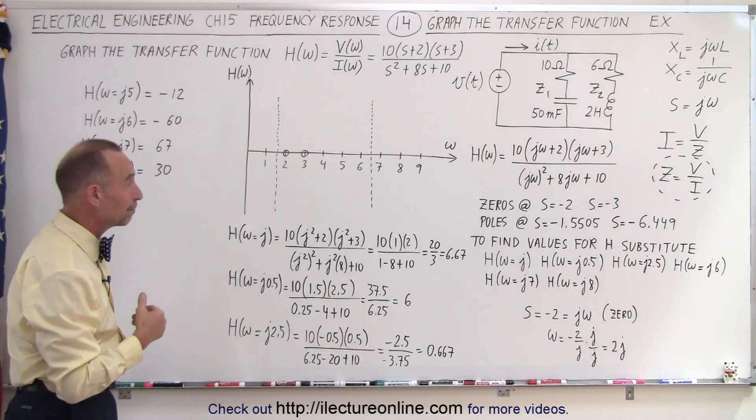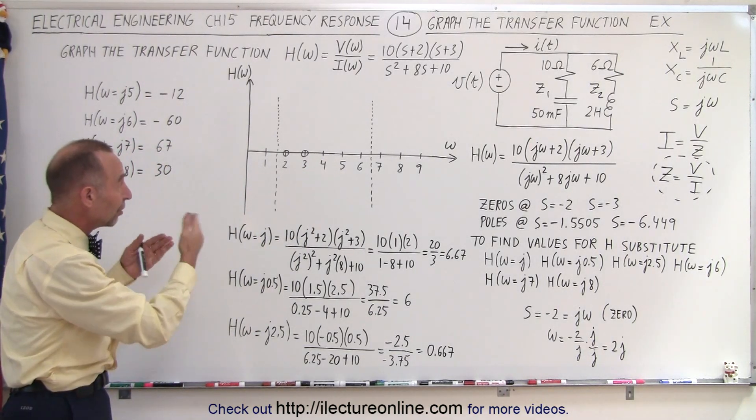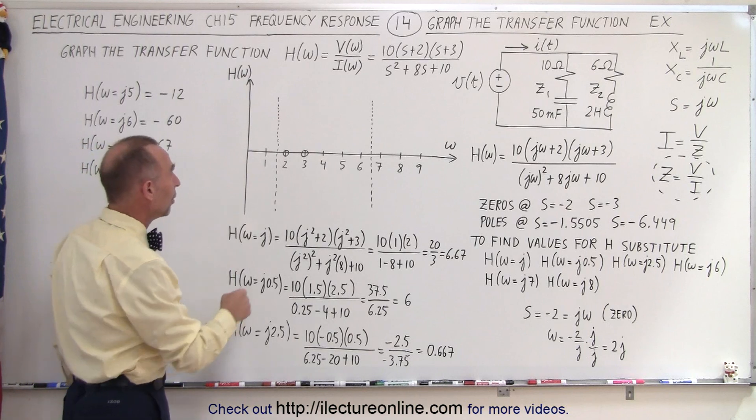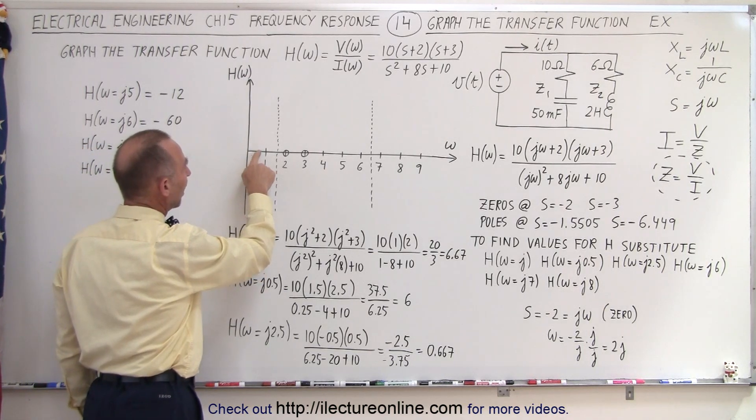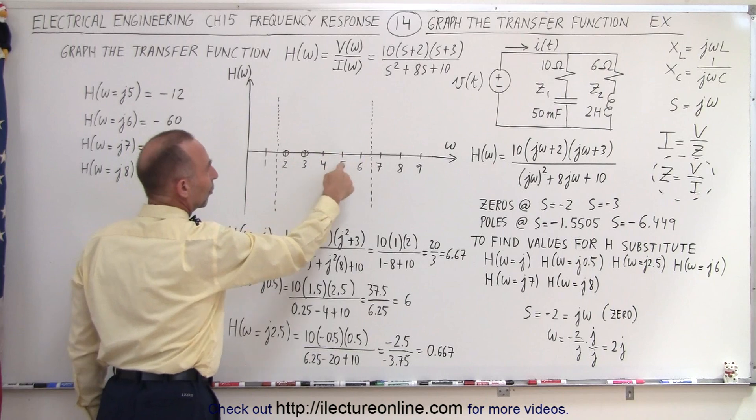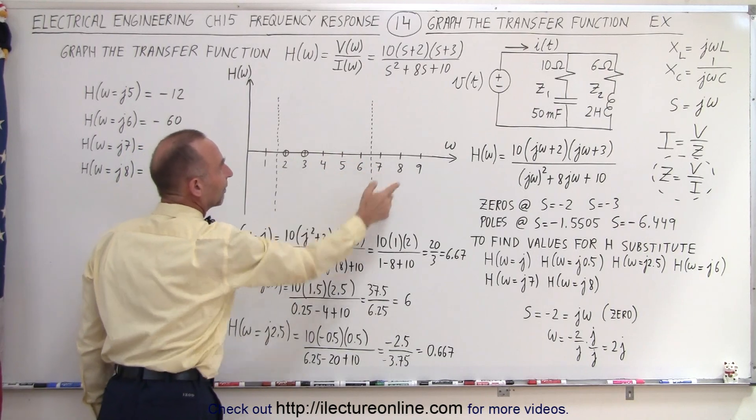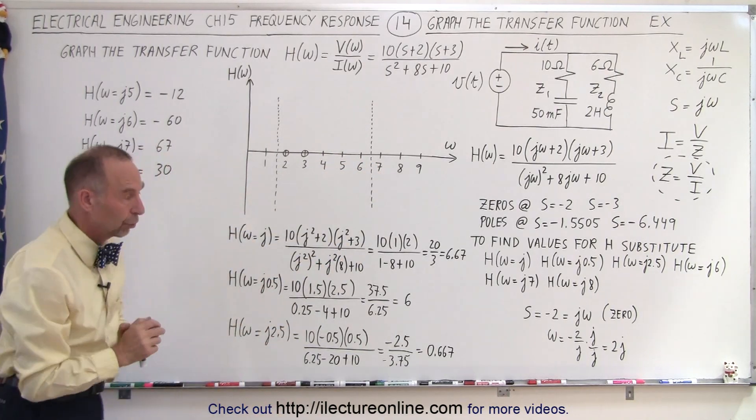Now what does the graph look like? Well, what we need to do is evaluate some of the other points. For example, we might want to evaluate it at 0.5, at 1, at 2.5, and then somewhere like maybe 5, 6, 7, and 8 to see what that curve looks like.